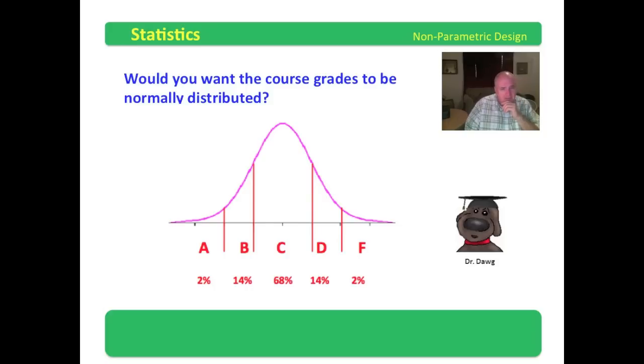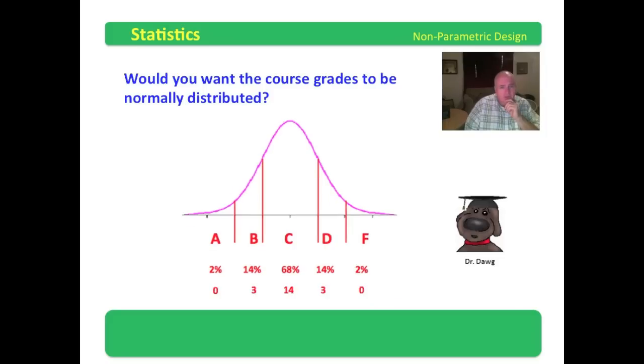The 2% get F's might be OK, but what if nobody actually failed? Are you going to give 2% of them an F anyway? Well, if you're going to make your grades be normally distributed, that's what you're going to do.